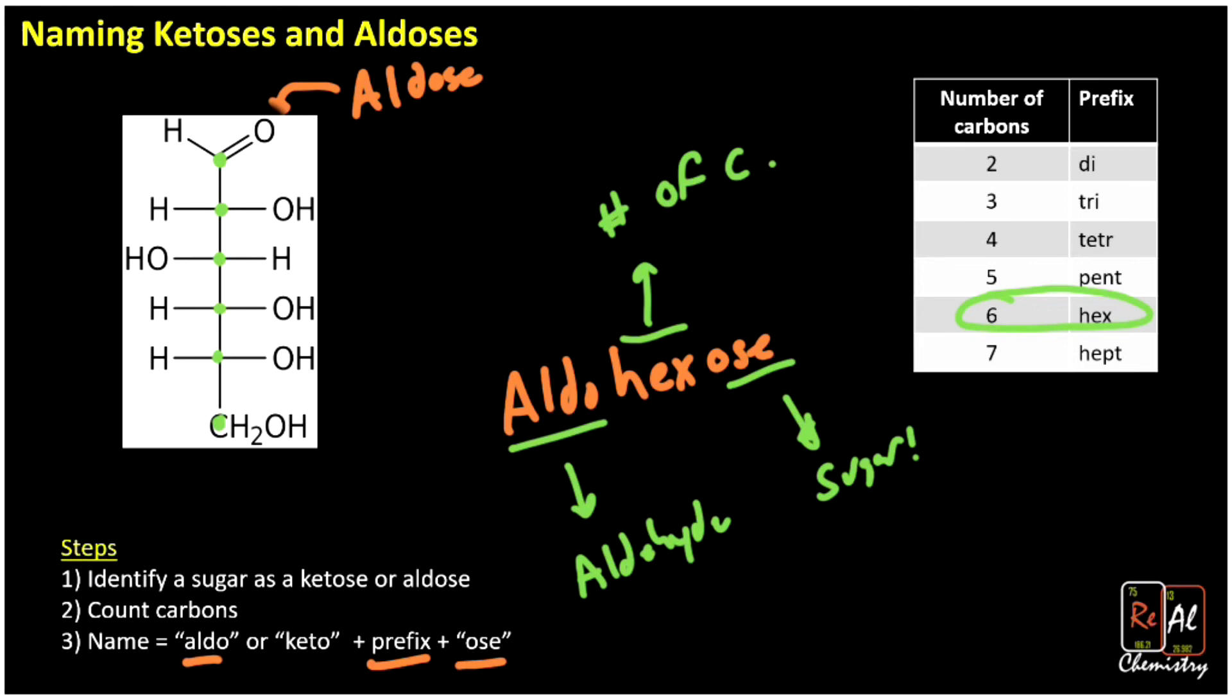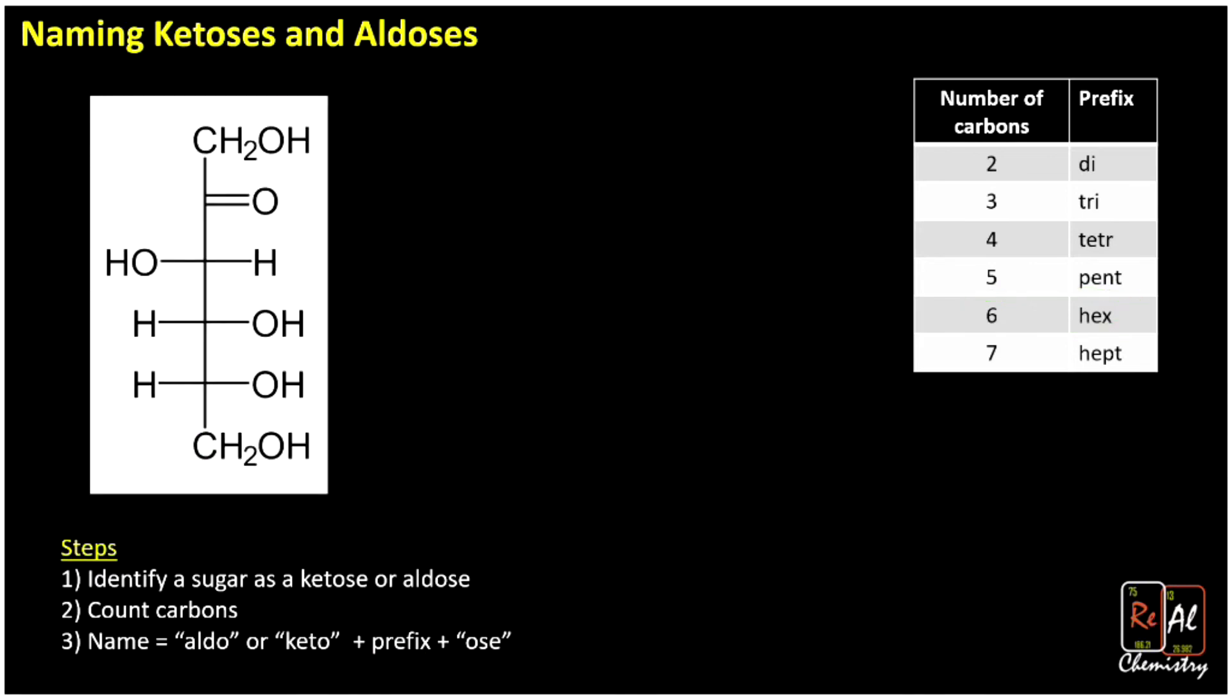Let's do one more example. So here we're going to identify the sugar as a ketose or an aldose. Because we have the C=O bond in the center of our chain, we know that this is a ketose. When we go to count the number of carbons, I'm going to count one, two, three, four, five, six. So once again, six carbons, which is not an uncommon number to get for sugars.